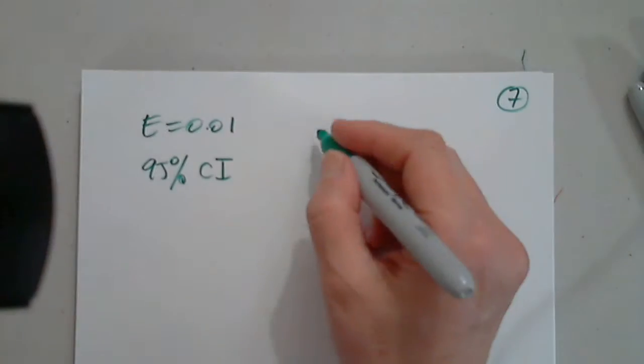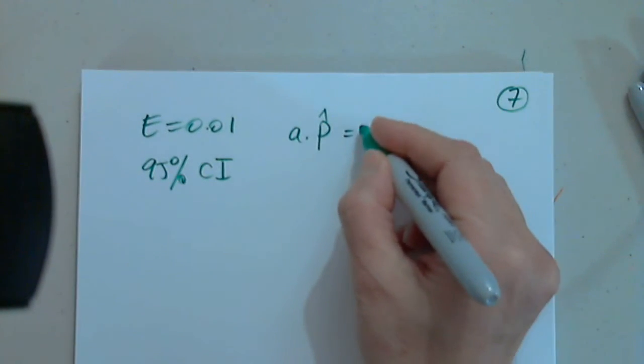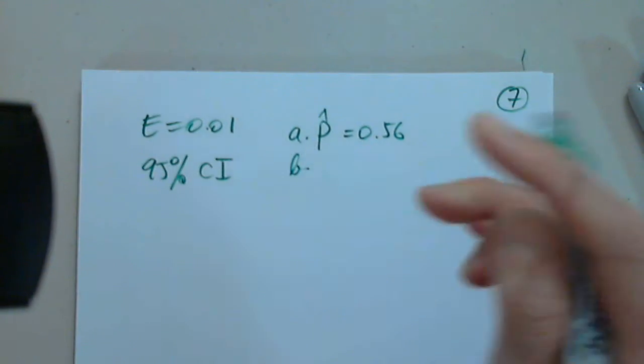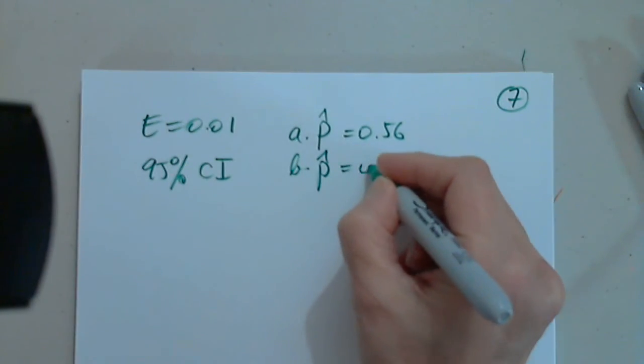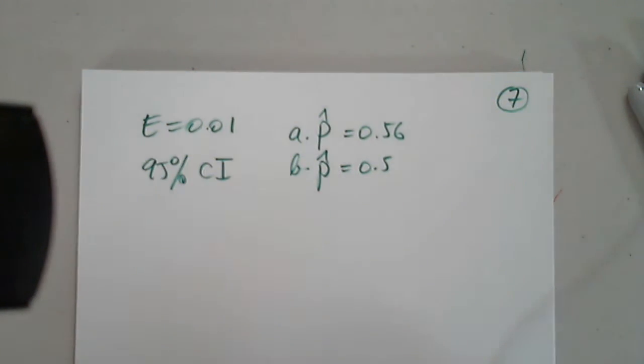She uses the prior p-hat, that's part A, as I just mentioned. And part B, there is no prior estimate, which we have to use 0.5. Good, excellent.